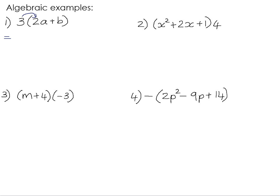So in order to multiply by the 3, we can use this distributive law to distribute the 3 across the two terms in the brackets. So 3 times 2a is 6a, and 3 times b is positive 3b.